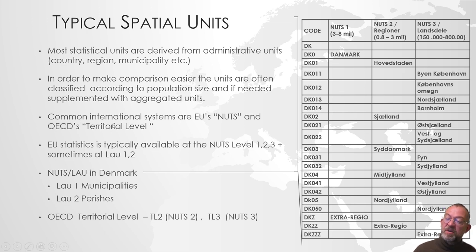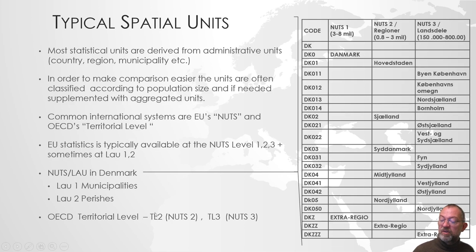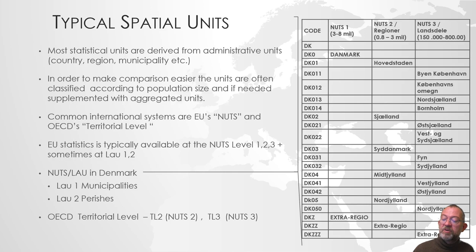The OECD has the same concept. They call them territorial levels, and they use additional ones. They also have LAU — Local Administrative Units. LAU 1 is municipality and LAU 2 is parish, though not seldom used. OECD's territorial level TL2 is the same as NUTS level 2, and TL3 is the same as NUTS level 3, so data from the OECD will be comparable with NUTS level 2 and 3.